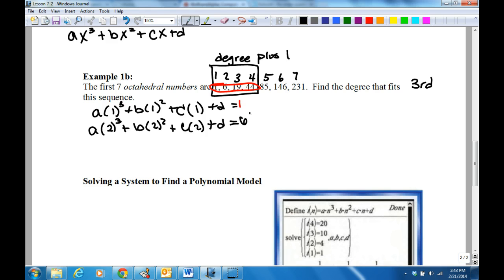I'm just using the number of numbers right now. We're on the second number. The next one's going to be a times three to the third because we're at our third number, b times three squared plus c times three plus d, and that equals 19. And the last one: a times four to the third plus b times four squared plus c times four plus d equals 44.